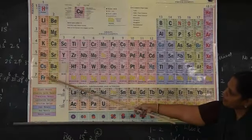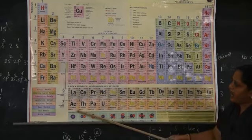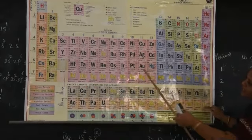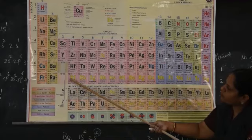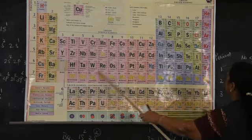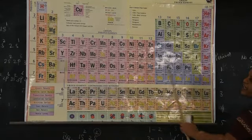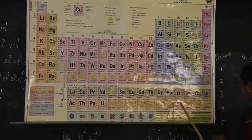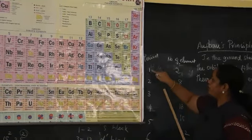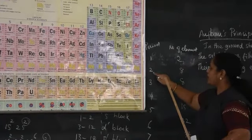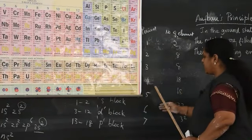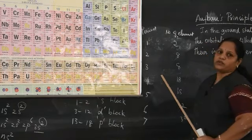In the seventh period, atomic numbers 87 and 88 come first, then 89 (actinium), followed by atomic numbers 90–103 as F block elements, and 104–118 as D block elements. The seventh period also has 32 elements. Summary: Period 1 = 2, Period 2 = 8, Period 3 = 8, Period 4 = 18, Period 5 = 18, Periods 6 and 7 = 32 each.